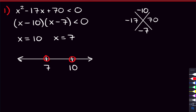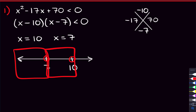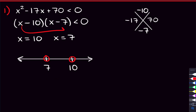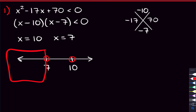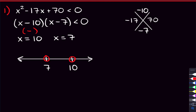The next step is going to be checking these three regions — seeing whether this quadratic is going to be greater than zero or less than zero in each region. We'll check the first region, which is any number less than seven. Let's pick zero. If we plug zero in for x, we get zero minus 10, that's negative 10 — a negative number. Plugging zero into the second factor, we get zero minus seven, that's negative seven — another negative number. And negative times negative gives you a positive number.